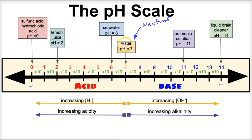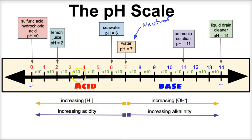For example, at a pH of seven we have water. As we move to a pH of six, we have ocean water or seawater. And if we continue to move down to a pH of two, we're dealing with more acidic substances like lemon juice with a pH of two, or sulfuric acid or hydrochloric acid with a pH of zero. Solutions become more acidic as you move from seven to zero, with more hydrogen ions and less hydroxide ions, and an increased acidity.